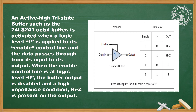Active high means the gate is enabled when the enable line is high — it is active when enable is high. When the enable control line is at logic level 0, the buffer output is disabled and a high impedance condition (high-Z) is present on the output. In the truth table, when enable is 0, both rows show output as high impedance. When enable equals 1, the output is equal to the input.